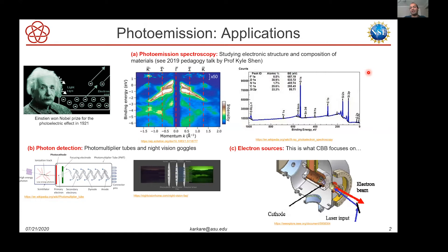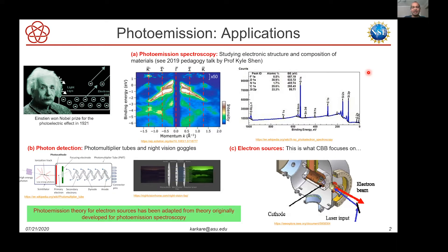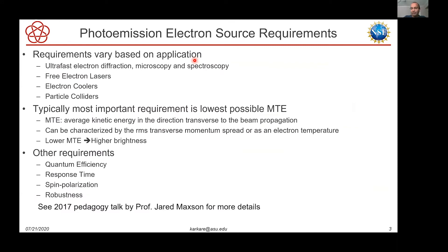In a photocathode, light is incident on the cathode, electrons are emitted, and you accelerate them to form an electron beam. A lot of the theory developed for photo emission electron sources has really been adapted from theory originally developed for photo emission spectroscopy, since spectroscopy is by far the most well-developed application. In this talk I'll go over some of these photo emission theories and towards the end discuss how the theories for electron sources should differ from those developed for spectroscopy.